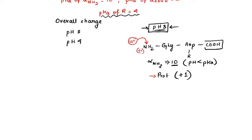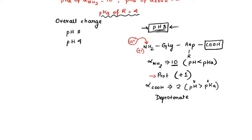Next, the alpha carboxylic group has a pKa of 2. The pH is 8, which is greater than the pKa of 2, so this group would be deprotonated — it releases its hydrogen ion, giving a charge of −1.